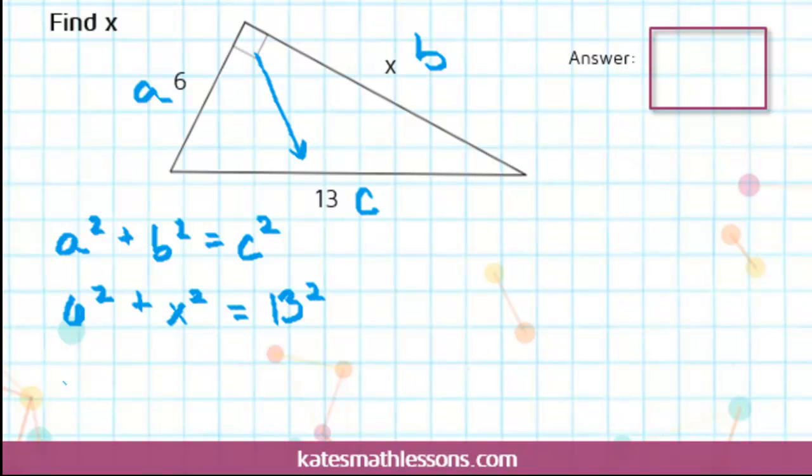After you plug them in, you just need to do some simplifying. 6 squared is 36, and 13 squared is 169.